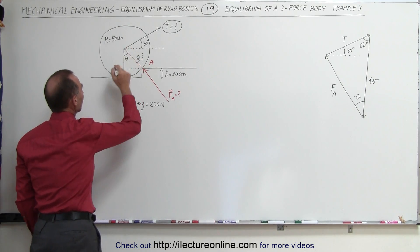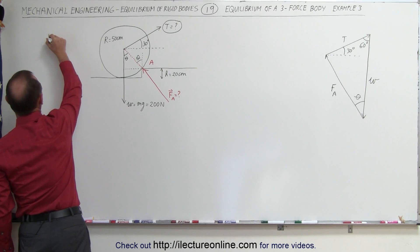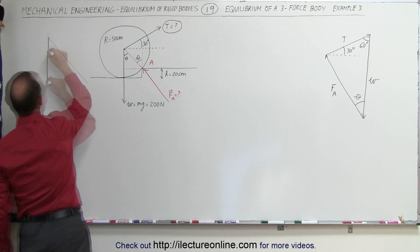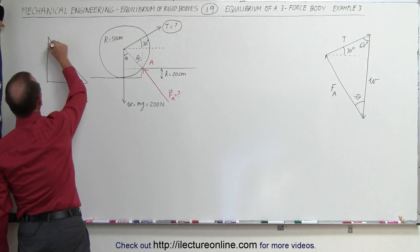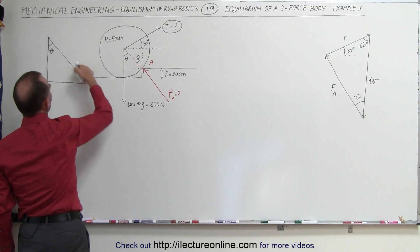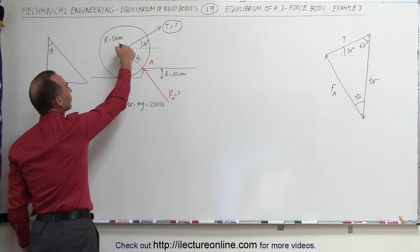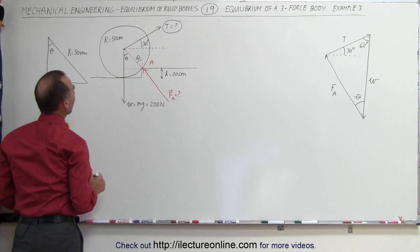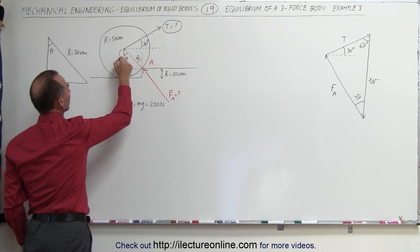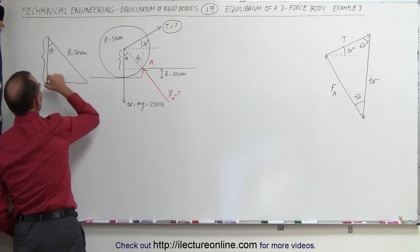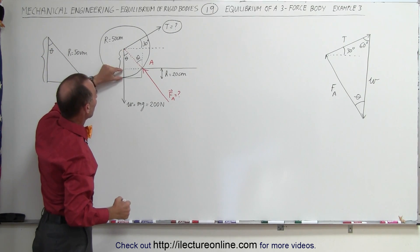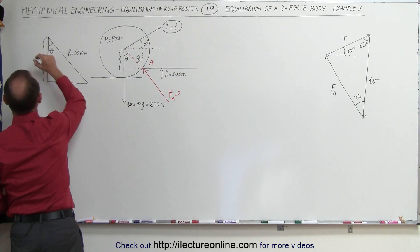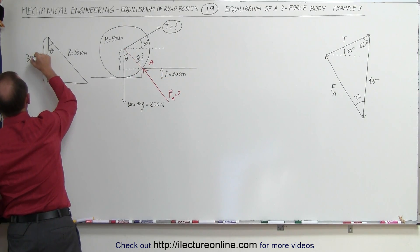Let's redraw that triangle a little bigger so it's easier to see. We're looking for the angle theta. This side here is the hypotenuse, which is equal to the radius of the circle, R = 50 centimeters. The adjacent side is equal to the radius of the circle minus the height of 20 centimeters, so that's 50 minus 20 = 30 centimeters.